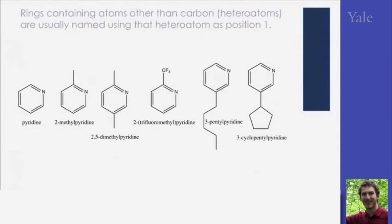Rings containing atoms other than carbon, heteroatoms, are usually named using that heteroatom as position 1. For instance, 2,5-dimethylpyridine. And you can see that substituents can be, as before we saw heteroatoms like bromo or nitro groups. You can also have chains and rings and pretty much anything that you want as a substituent.